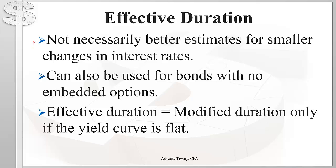An interesting property of effective duration is that it does not necessarily provide better estimates for smaller changes in interest rates. If the interest rate is 10% and goes down to 9.9%, the issuer of a callable bond will not necessarily call the bonds due to transaction costs. However, if the rate drops from 10% to 8%, there is a much larger incentive to call. This is different from modified duration, which provides its best estimates for small changes in yield to maturity.